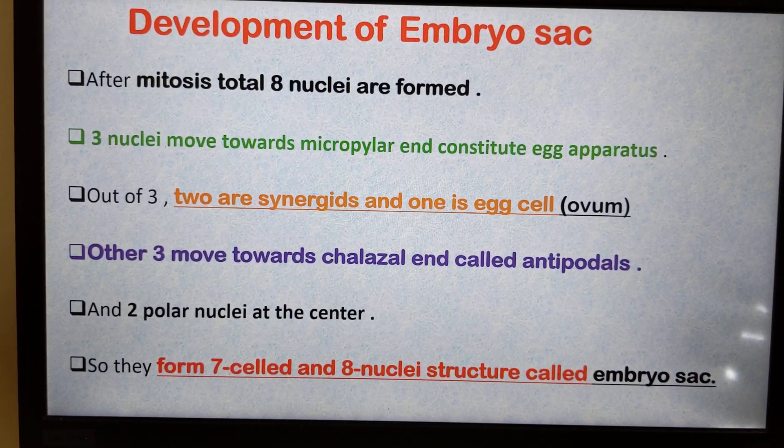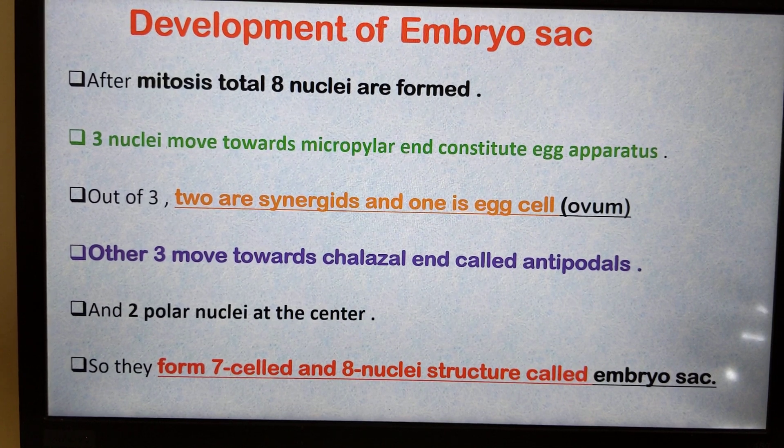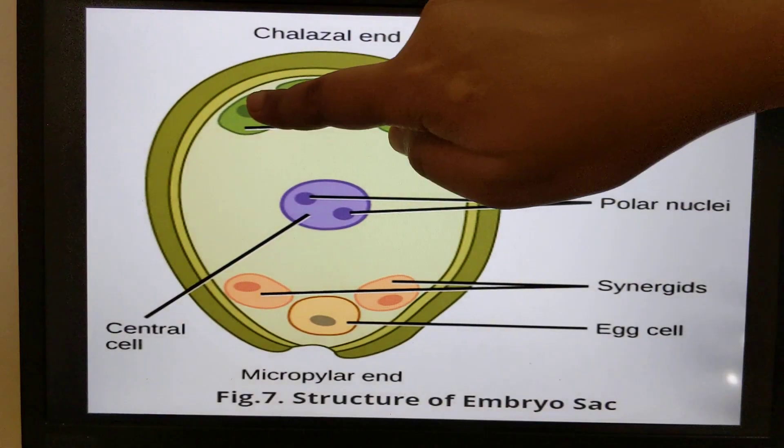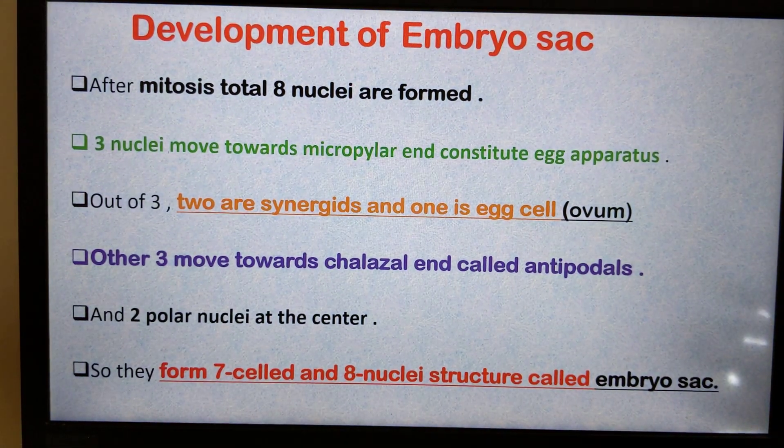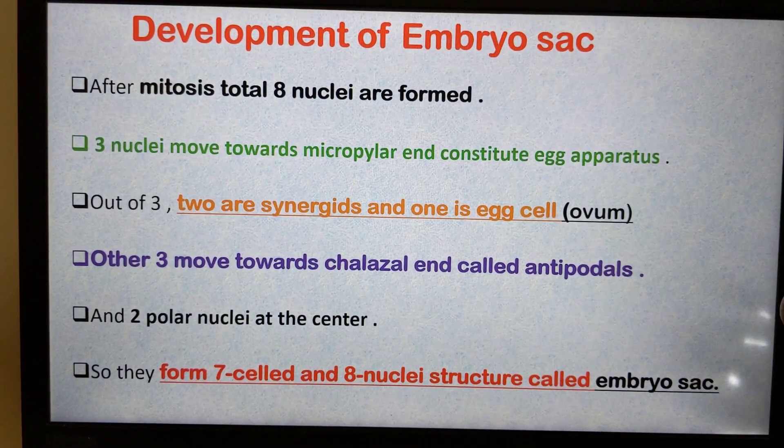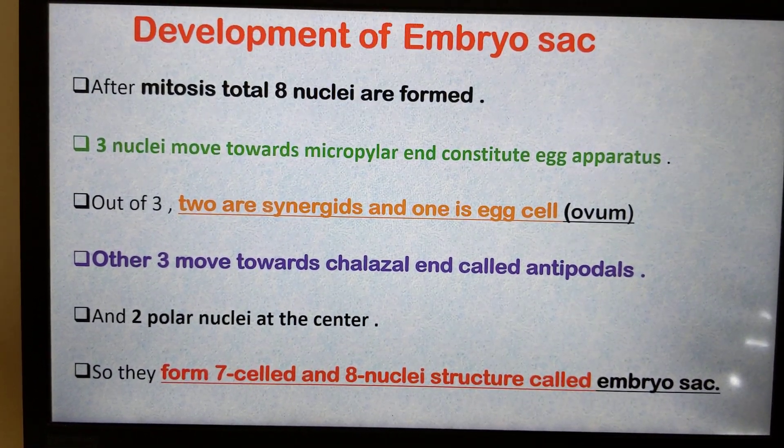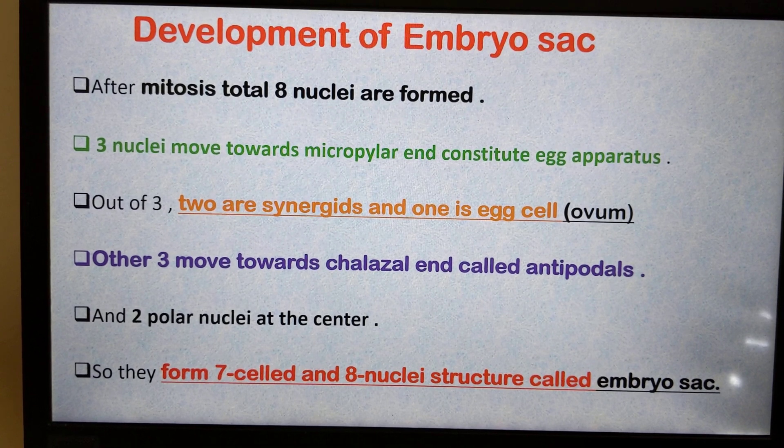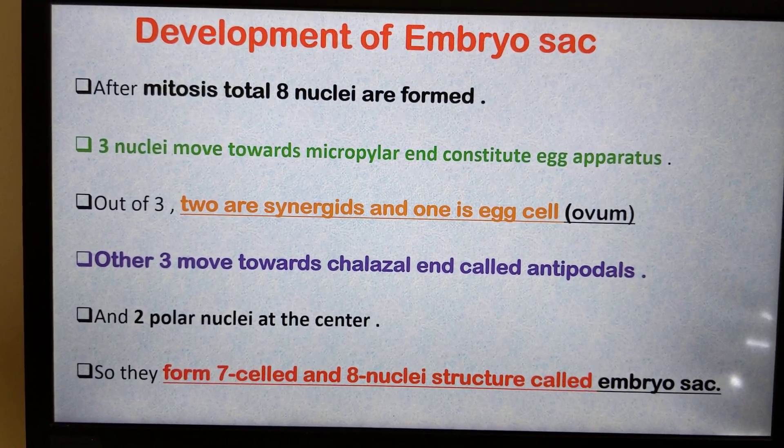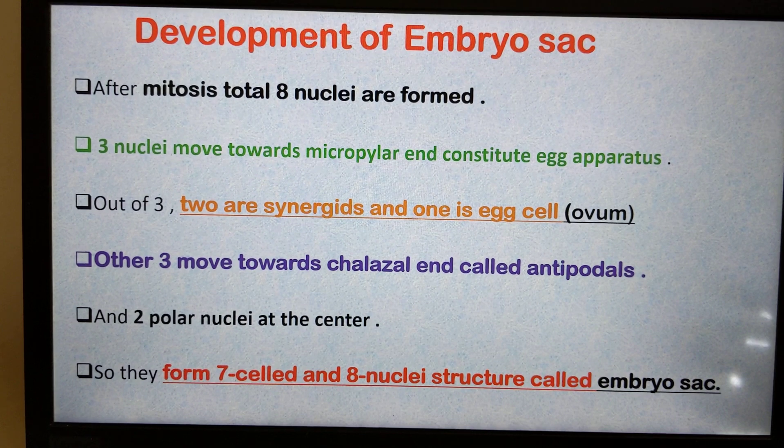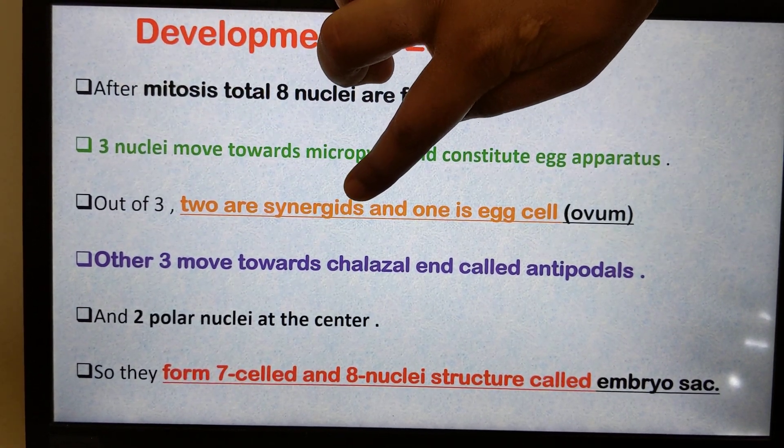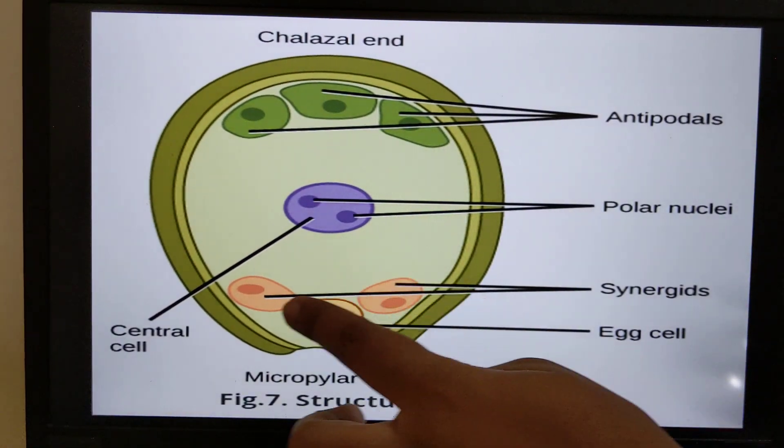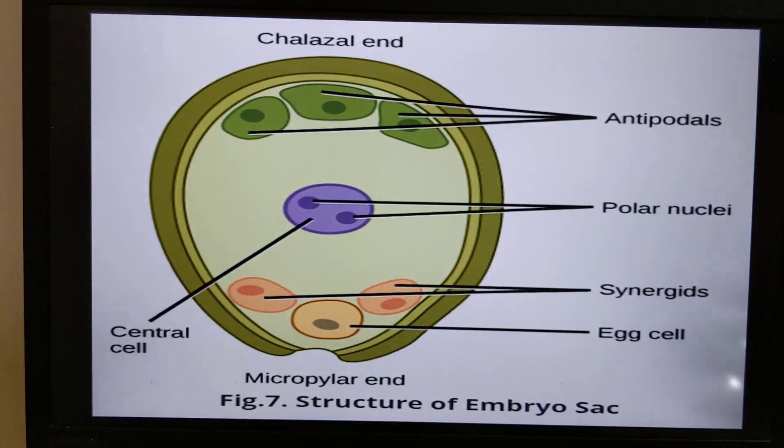After mitosis, we have seen the development of female gametophyte. The mitosis takes place and forms 8 nuclei. Out of that, three nuclei move towards micropylar end to constitute egg apparatus. Out of 3, two are synergids and one is egg cell or ovum. This three at micropylar end: egg cell and two synergids.